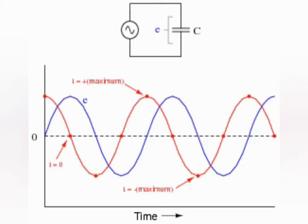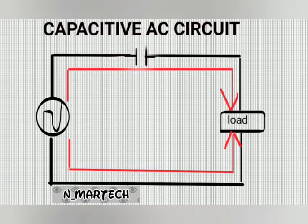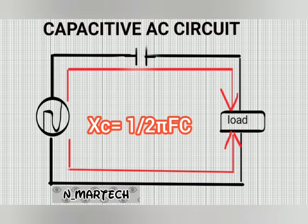In a capacitive AC circuit, current reaches peak value before voltage — voltage lags behind current. At the same supply frequency, the capacitor charges and discharges alternately, and the polarity of the plates changes alternately as well. The change in current in such a circuit experiences an opposition. This opposition is known as capacitive reactance.